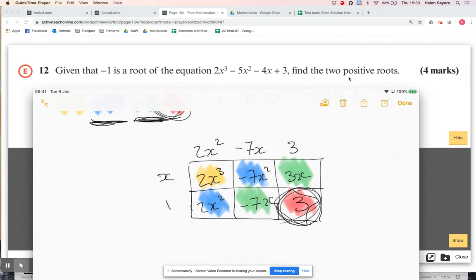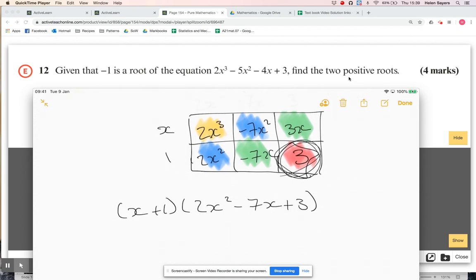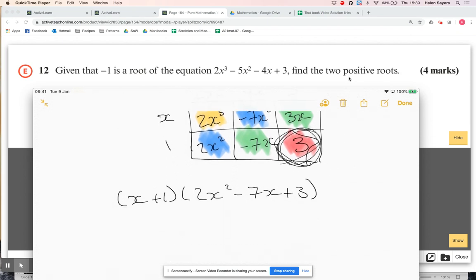Whichever way you do it, you end up with (x+1)(2x² - 7x + 3). It didn't mention an exact answer, so I think it's worth checking whether that quadratic factorizes. Two is a prime, so it's going to be 2x and x. Three is a prime. It can be -3 times 2x to get -6x, and -1 times x to get -x.